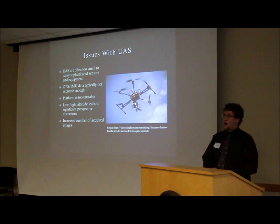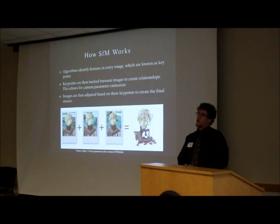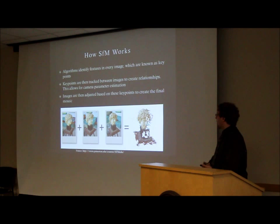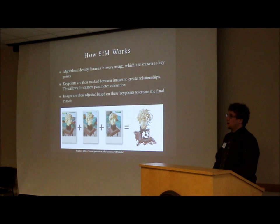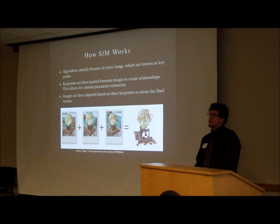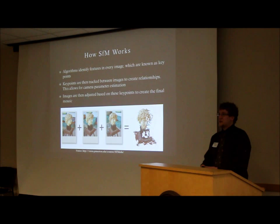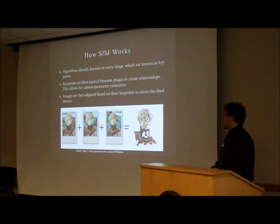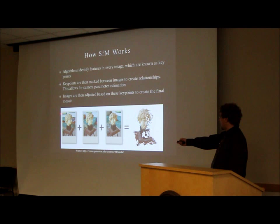With a platform that's so unstable, how do you handle this? Luckily, new algorithms are coming out. Structure from Motion is one of the biggest. It goes through the imagery, uses algorithms to identify points in each image, and tracks those points between images to build relationships. It uses those points to create what's called a dense point cloud, and from those it can estimate the camera's orientation and viewing angle, so you can then overlap your imagery. As you can see from this picture, you have the same face viewed through three different angles, and it's able to create a point cloud.